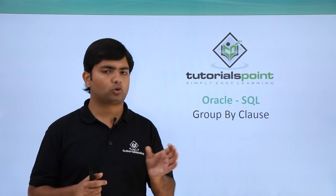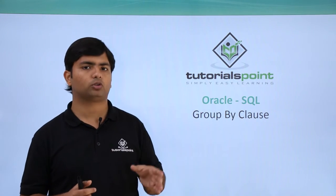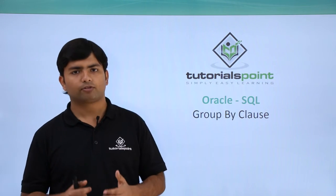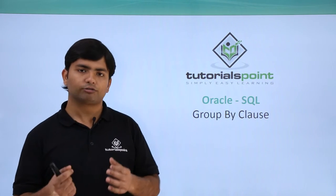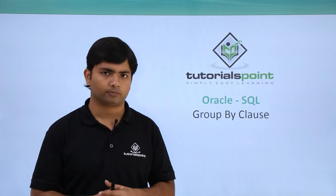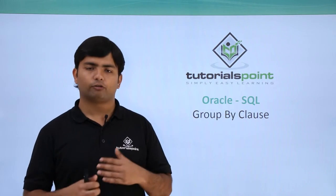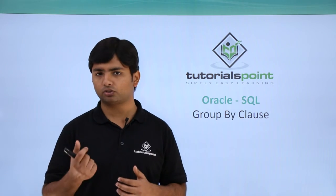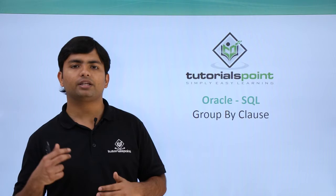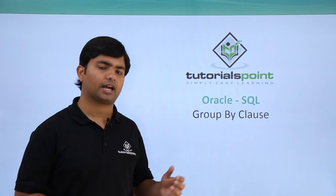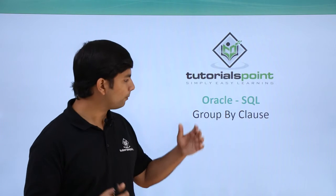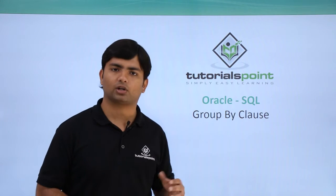In the GROUP BY clause I will specify the name of the column on the basis of which I want to create a group. And after that, if from the output you want to filter the group, you can use the HAVING clause. We have already used the WHERE clause which is used to filter rows, but here for filtering groups we will use the HAVING clause. So let's find out how we can work with GROUP BY and HAVING practically.